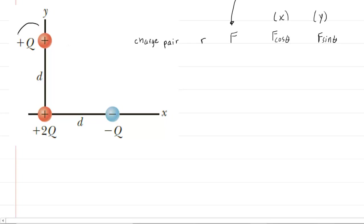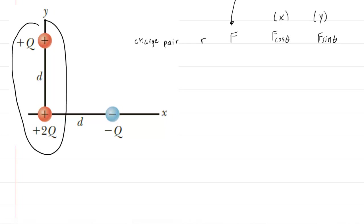Let's consider the two charges circled here. We know that they are both positively charged, so there would be a repulsive force acting on each charge. That would mean that positive Q would be pushed upward along the positive Y axis. We might label that force F sub Q,2Q, just to indicate that that electrostatic repulsive force is between charges Q and 2Q.